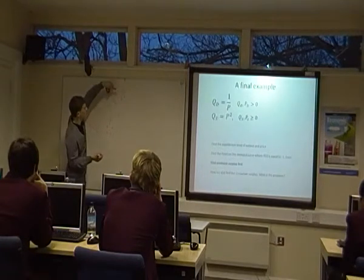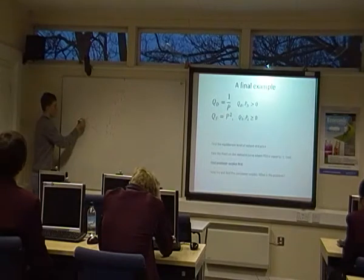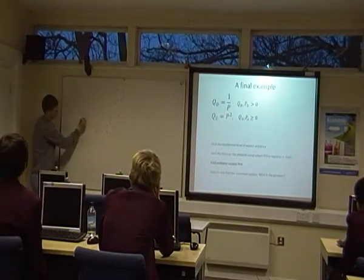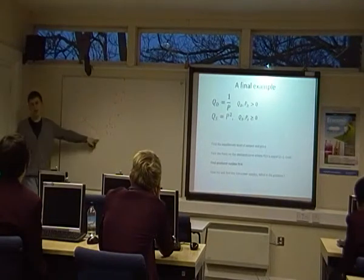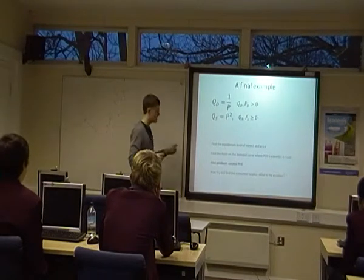So we found P equals 1. If we plug P equals 1 into here, we get Q equals 1. So we've got this point, we've found the quantity where quantity demanded equals quantity supplied. That's the first bit, which is quite easy.